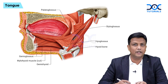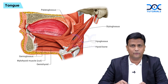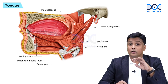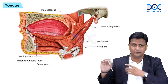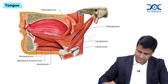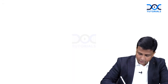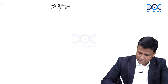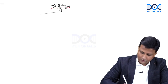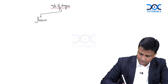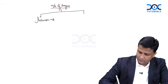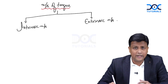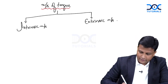Moving on to the next topic in head and neck — tongue — one of the most important topics. We have to learn two things: number one, the muscles of the tongue, and then the most important thing, the nerves of the tongue. All the muscles of the tongue are divided into two categories: the muscles inside the tongue are intrinsic muscles, and those outside the tongue are extrinsic muscles.